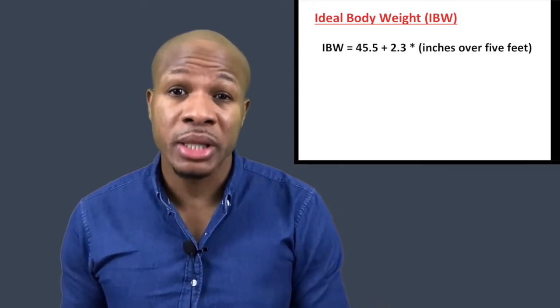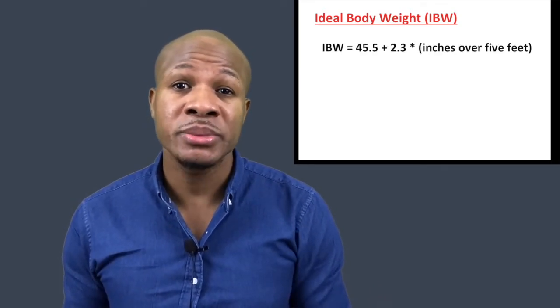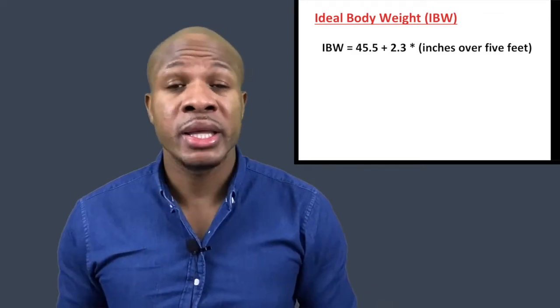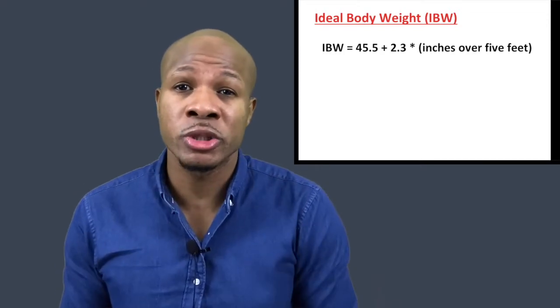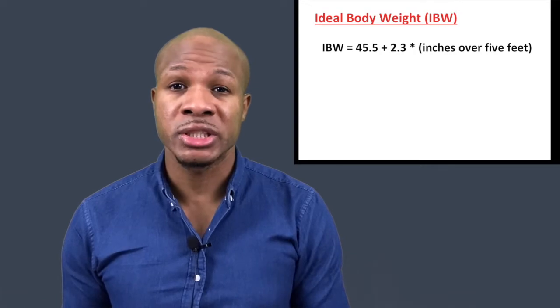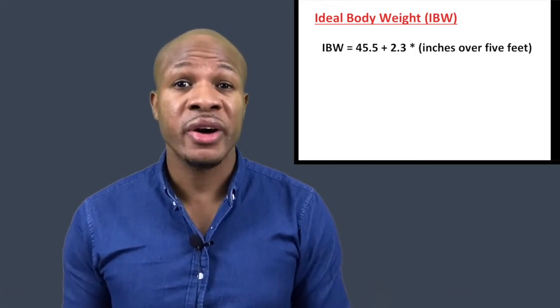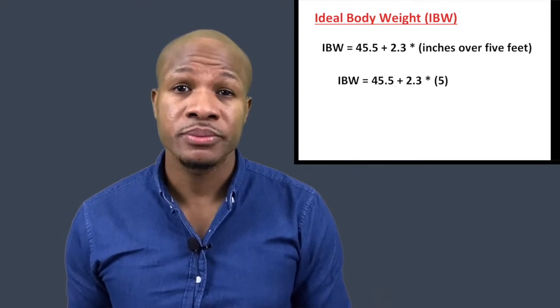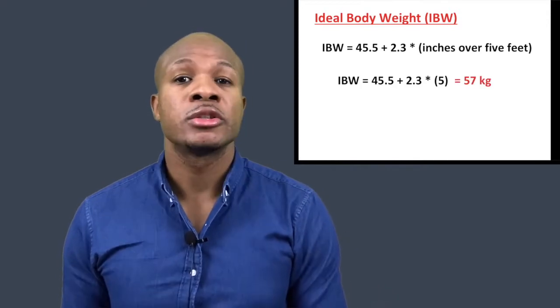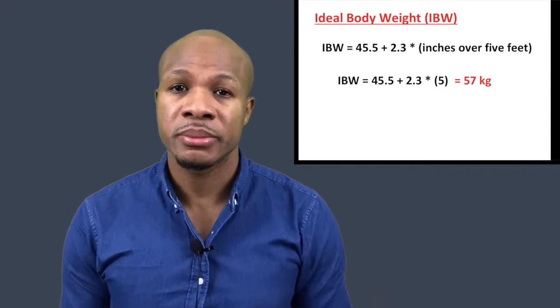When it comes to calculating creatinine clearance, the first thing we want to do is calculate the patient's ideal body weight. For a female patient, the equation for ideal body weight is 45.5 plus 2.3 times the total number of inches above 5 feet — this is an equation we need to know off the top of our heads. So for this patient: 45.5 plus 2.3 times 5, since she is 5 inches above 5 feet, which gives us 57 kilograms.